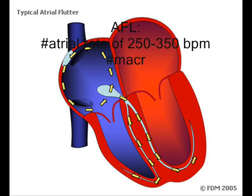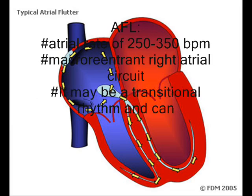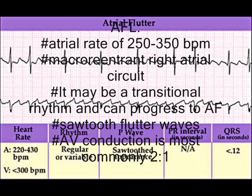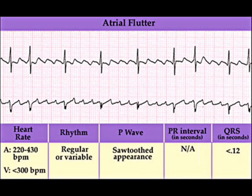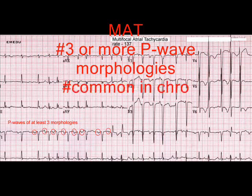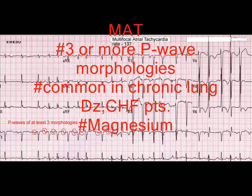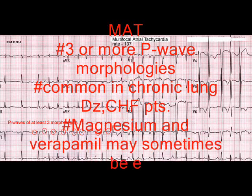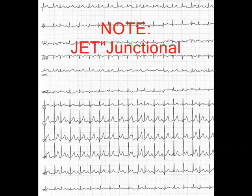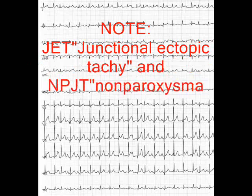Atrial flutter, on the other hand, has an atrial rate of 250 to 350 due to a macro-reentrant right atrial circuit. It may be a transitional rhythm leading to AF, and the characteristic sawtooth pattern in lead aVF is the hallmark finding. MAT requires three or more P wave morphologies and is common in chronic lung disease. Magnesium therapy may sometimes be effective.